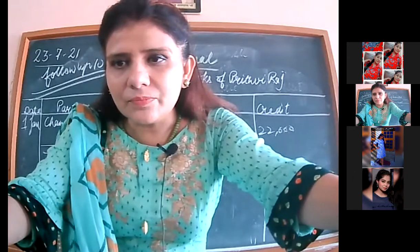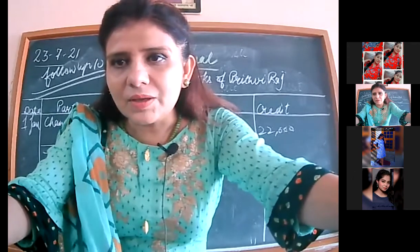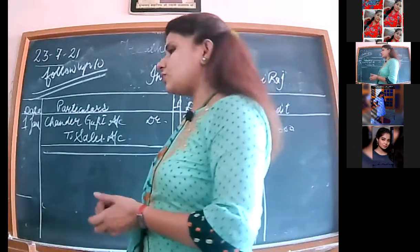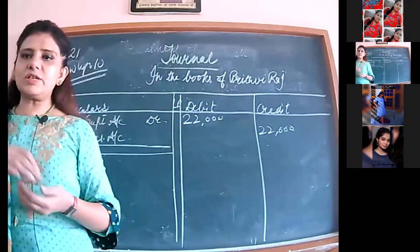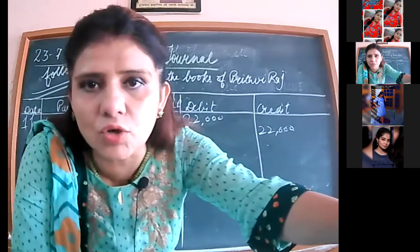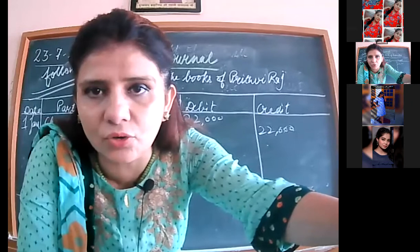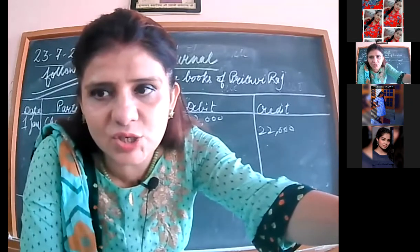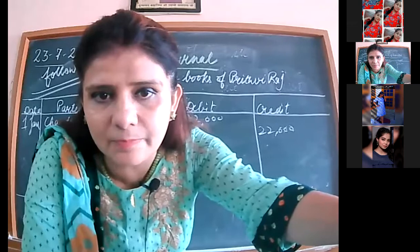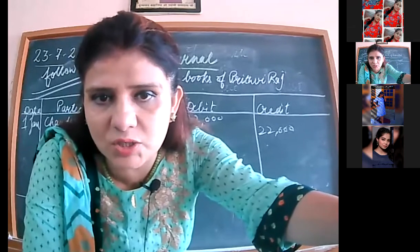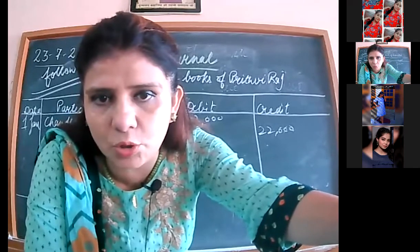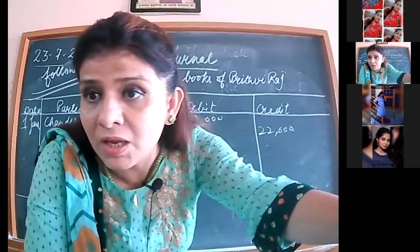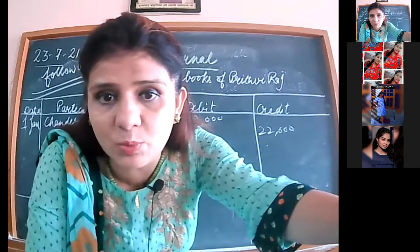Purchase account debited to cash account. Goods are coming in — we call it purchases. Cash is going out. Changez Khan's name will not appear because the transaction was done in cash. Purchase account debited to cash — Rs. 33,000. Narration: being goods purchased for cash.